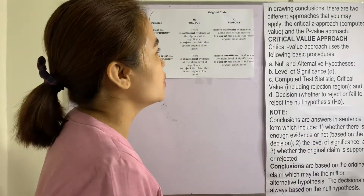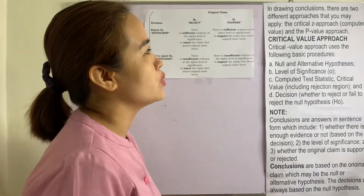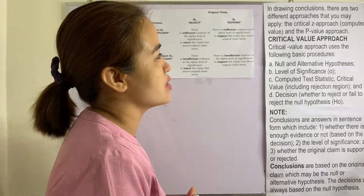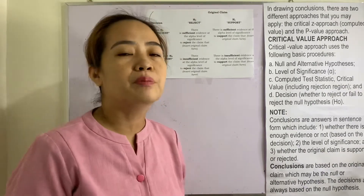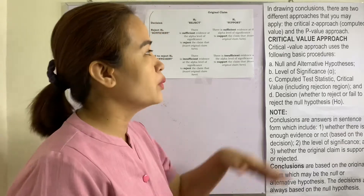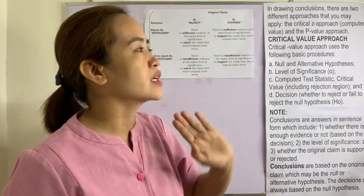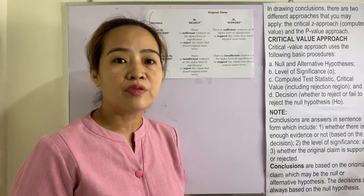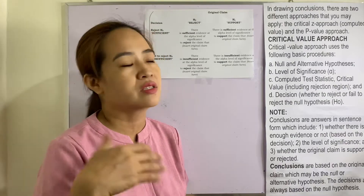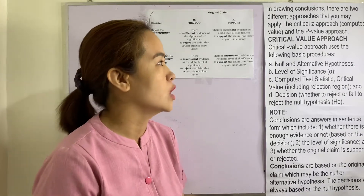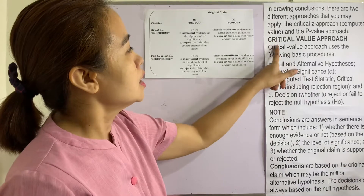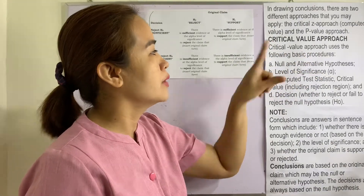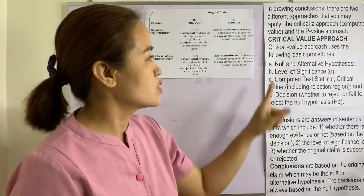In drawing conclusions, there are two different approaches you may apply: the critical z approach, or the computed z value and the p-value approach. We will be using the critical z approach since we are already familiar with the z-table and the z distribution.